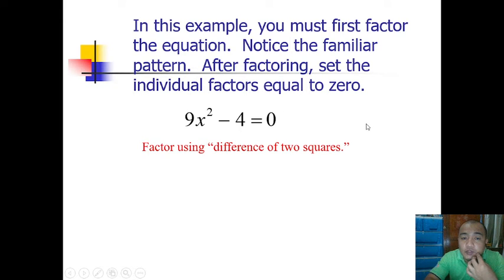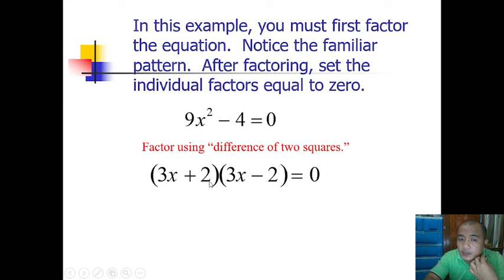Factor using difference of two squares: (3x+2)(3x-2). Get the square root of 9x², which is 3x; square root of 4 is 2. Then add plus and minus. So (3x+2)(3x-2)=0. By zero product property, 3x+2=0 or 3x-2=0.